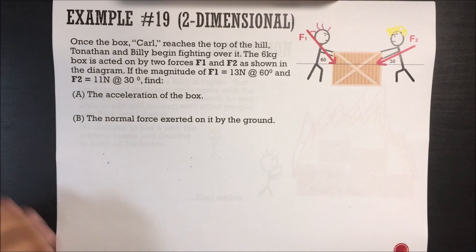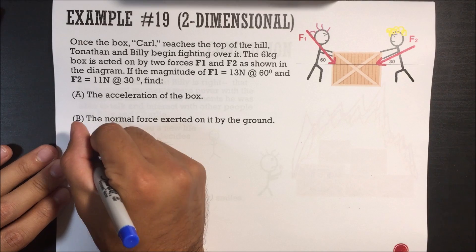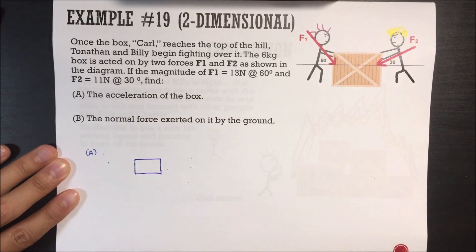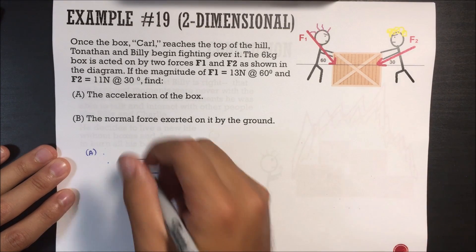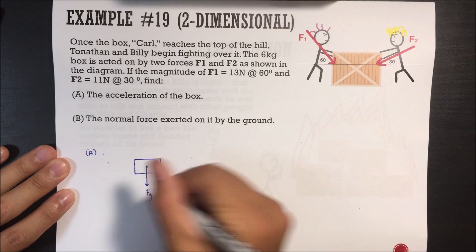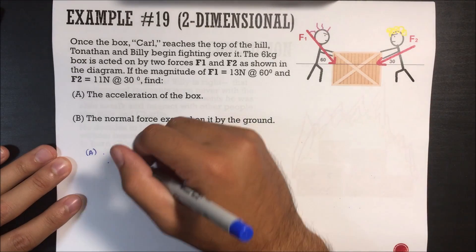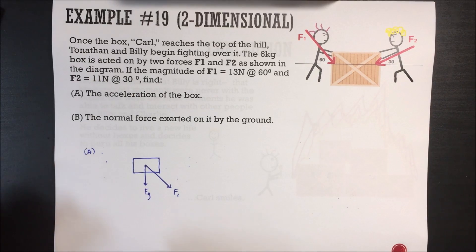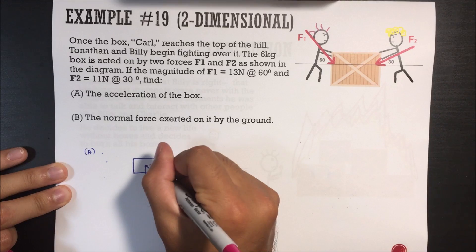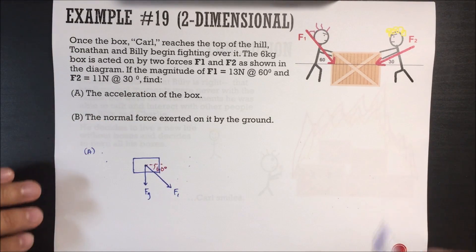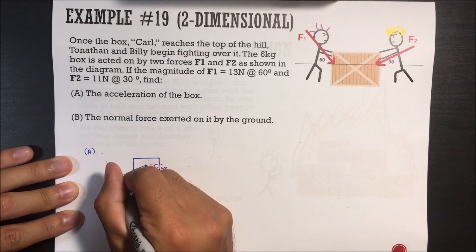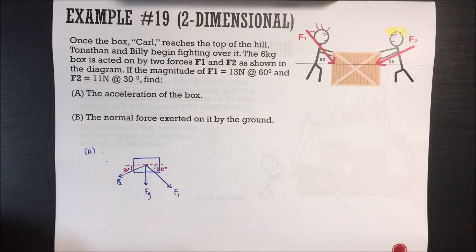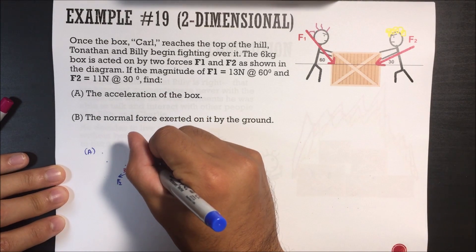The first thing we always want to do is draw a free body diagram — I'm going to draw this a little bigger because there are a lot of forces going on. We have this box. Force of gravity is going to go straight down. F1 is pointing downward at an angle — it's being pushed downwards like that — with the angle of 60 degrees. F2 is going like this, with the angle of 30 degrees. And the last force is the normal force going up.